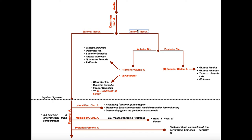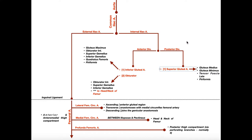We're going to cover the internal iliac artery first. The internal iliac artery itself is going to have two branches: an anterior division and a posterior division. With these two divisions, I have drastically simplified the number of branches, because in reality the anterior and posterior divisions actually each have three major branches. All we're looking at here are the major muscles and their blood supply in the hip and the thigh. With the anterior division, the two major branches for that purpose are the inferior gluteal artery and the obturator artery.